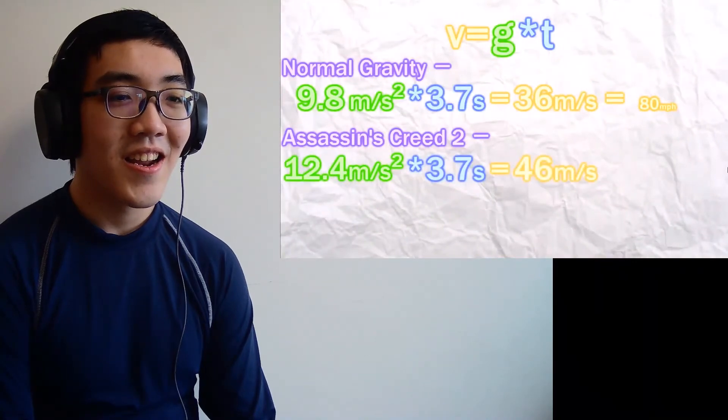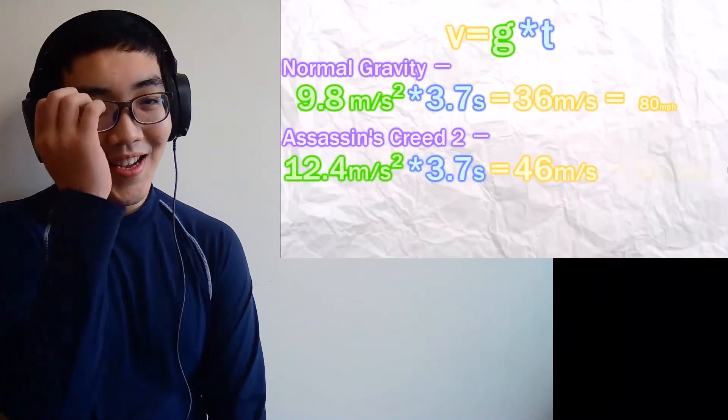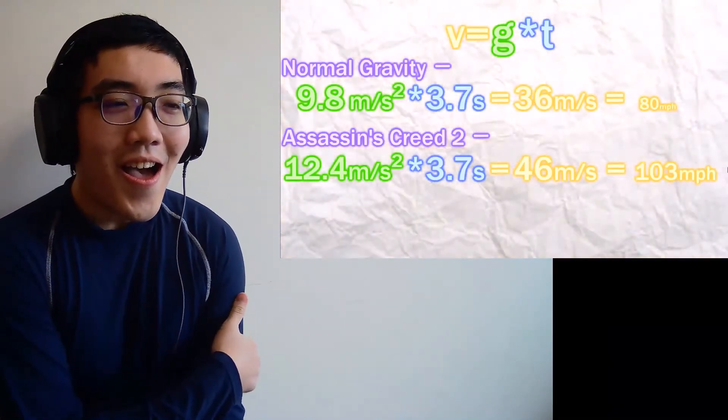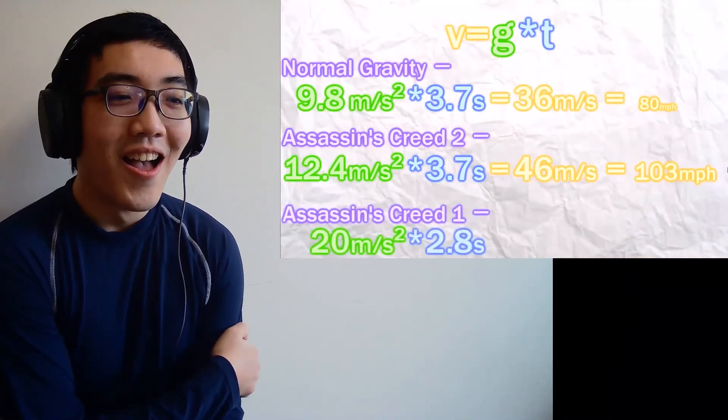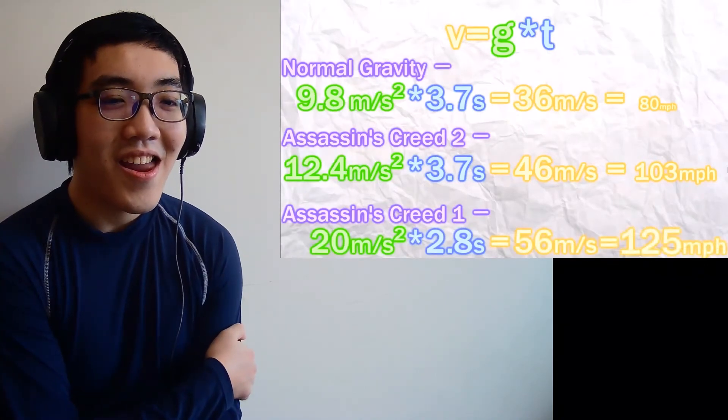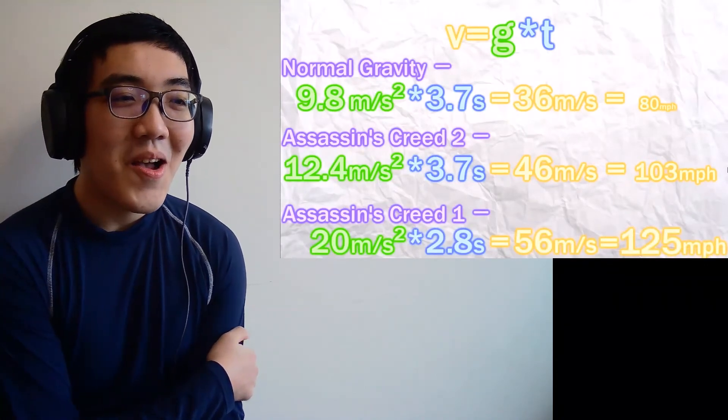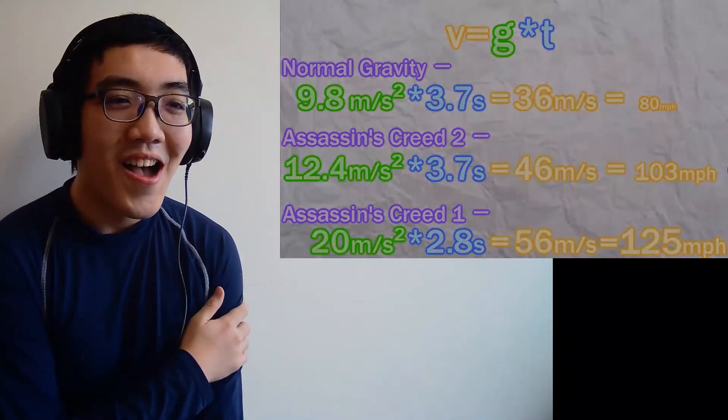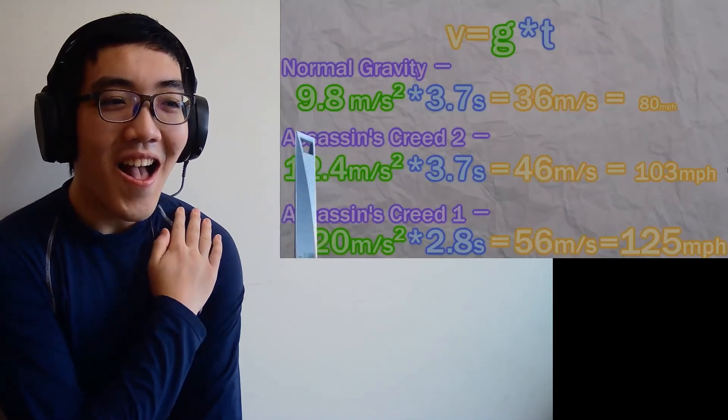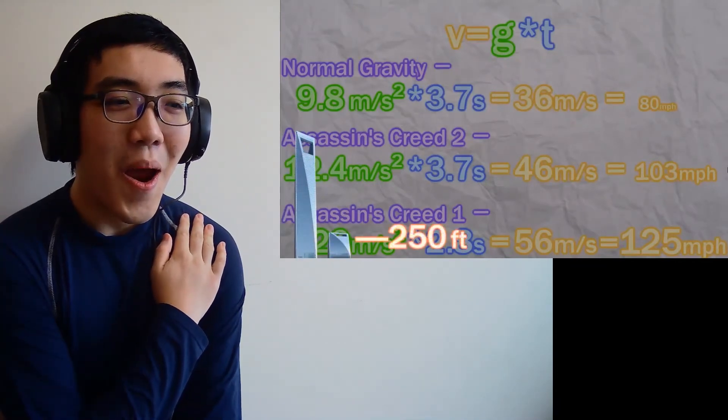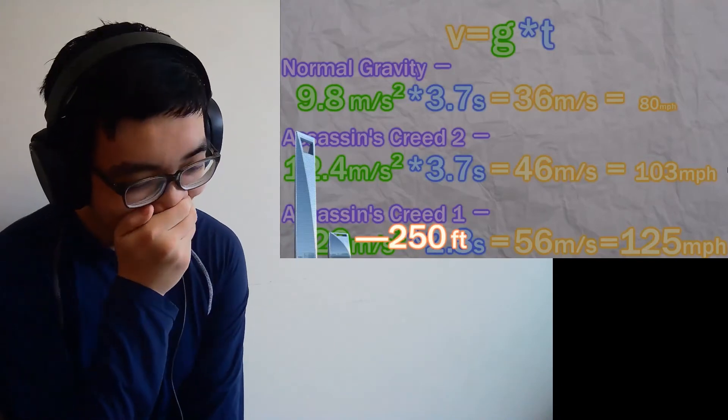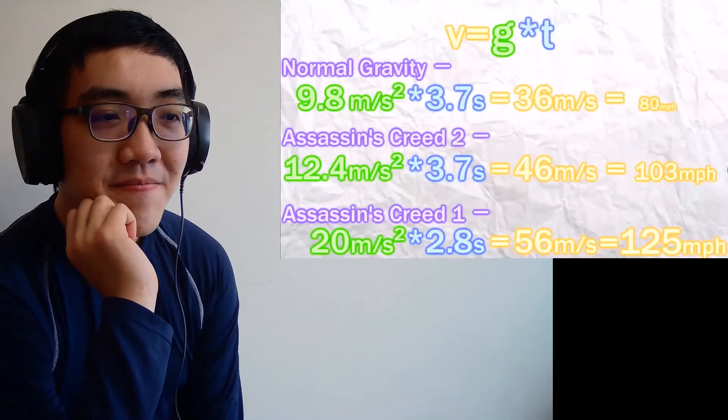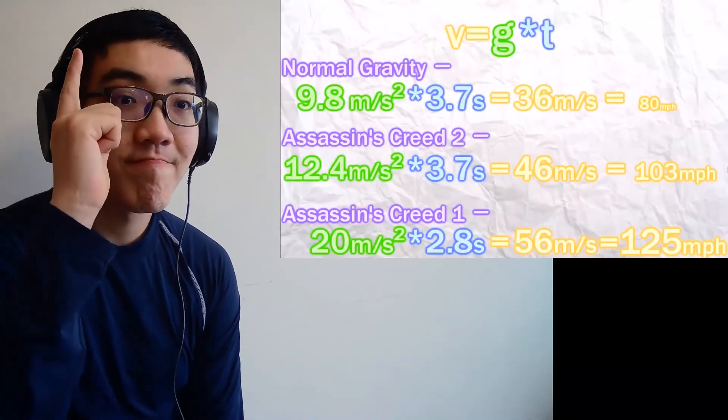What does this do to our chances of survival? Well, if you weren't facing certain death before, you certainly are now because higher G-forces mean more acceleration in a shorter time span. To calculate the velocity the instant before we hit the ground, we simply take the acceleration due to gravity and multiply by the time we've been falling. Under normal G-forces, you'd be hitting the hay at 36 meters per second or a leisurely 80 miles per hour. With the game's skewed gravity, however, you'd be hitting the ground at nearly 46 meters per second or 103 miles per hour.